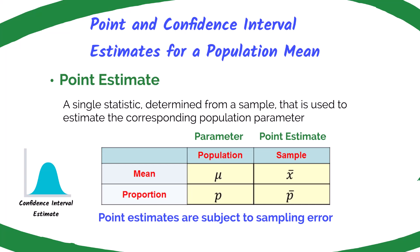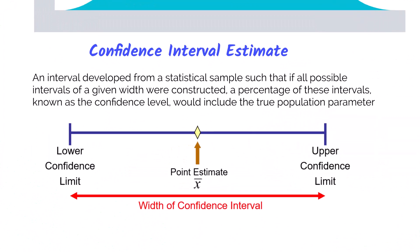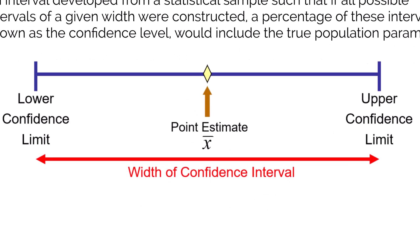These intervals are based on a particular confidence level. A confidence interval estimate is the interval developed from a statistical sample such that if all possible intervals of a given width were constructed, a percentage of these intervals — known as the confidence level — would include the true population parameter. The point estimate is in the very middle; say my average commute time from a sample is 40 minutes. The lower confidence limit is 35 minutes and the upper confidence limit is 45 minutes, equidistant from the sample mean.